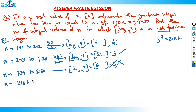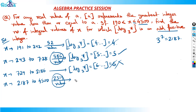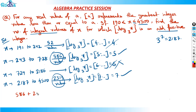Then from 2187 (which is 3 to the 7) to 4500 — my upper limit. The next power of 3 would be 6561, but I'm capped at 4500. The difference is 4500 minus 2187 = 2313, and including both endpoints that is 2314 values. Here log of x base 3 gives 7-point-something, so GIF = 7, which is an odd positive integer. Total values of x = 586 plus 2314 = 2900. So 2900 is the answer.